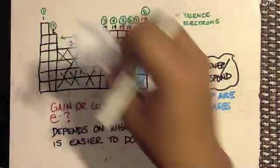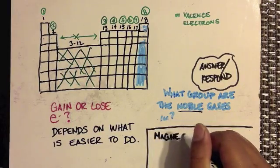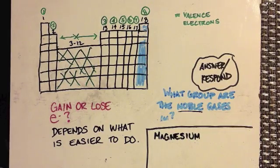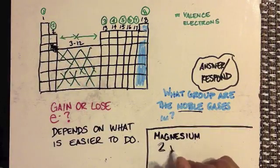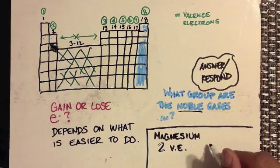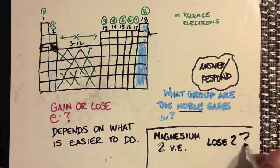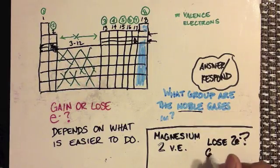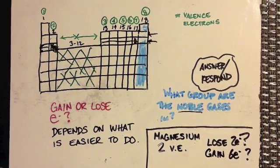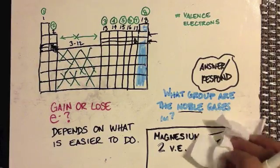So let's go ahead and erase this and pick a different element. Let's go ahead and pick the element magnesium. So magnesium, hopefully you remember, it has two valence electrons because it is located right in here. So magnesium has two valence electrons. Now we need to figure out, is it easier for magnesium to go back to be like the last noble gas by losing two electrons? Or is it easier to try and become like the next noble gas by gaining six electrons? Which one would be easier for magnesium to do? You should have picked lose two electrons because that would be much easier for magnesium to do.